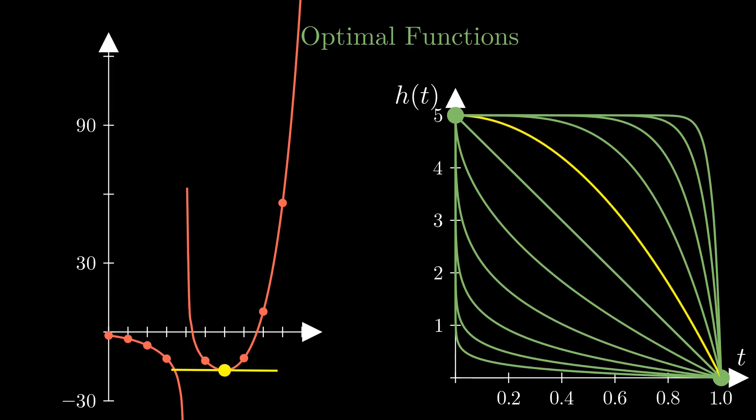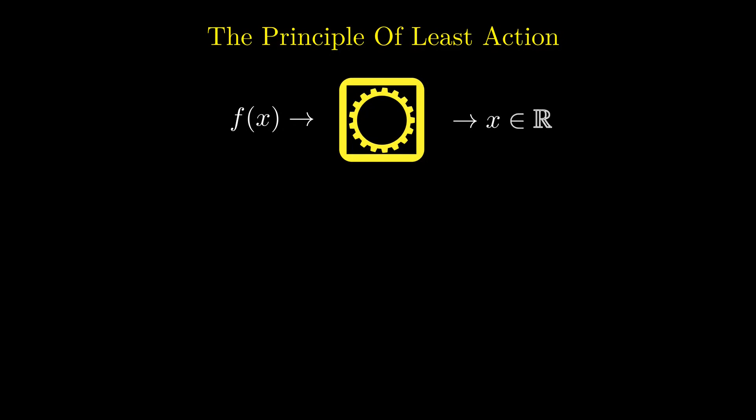And how does the operator look like? Physicists name this operator action and denote it with a capital S. For this example, it takes the following form. It is an integral from the time of the initial state to the time of the final state and it integrates the height function and the square of its first derivative, the velocity so to speak.